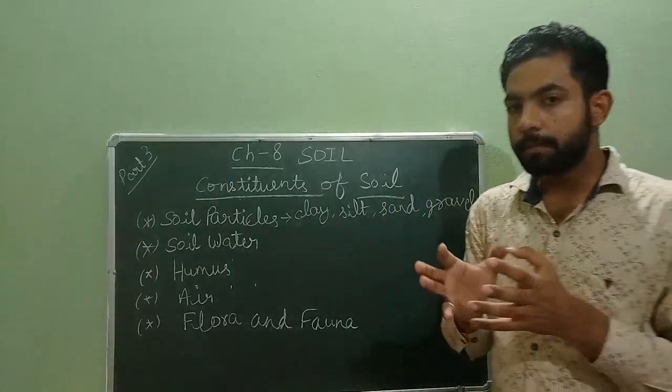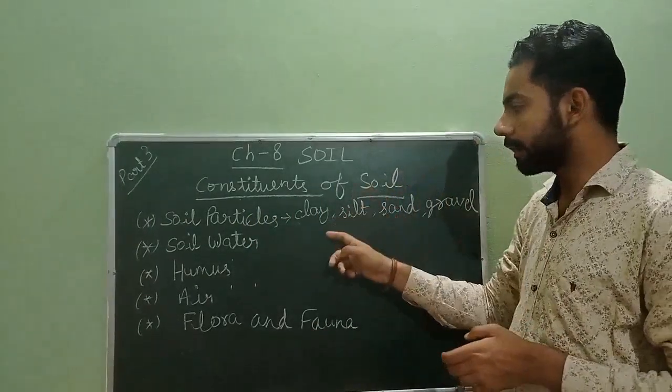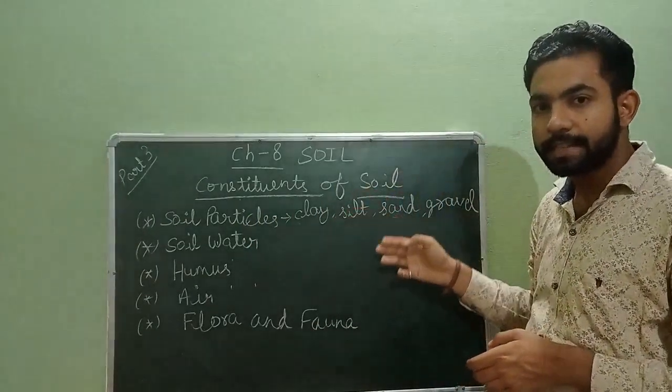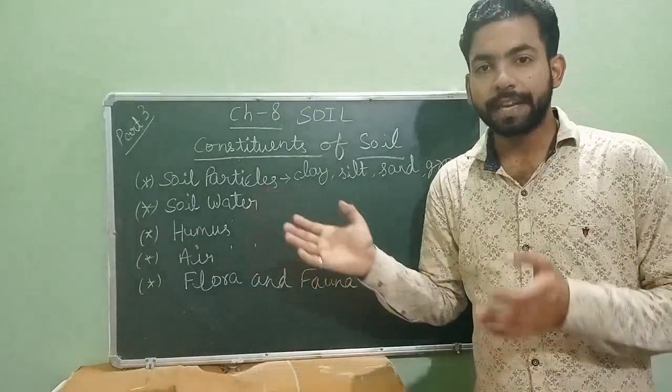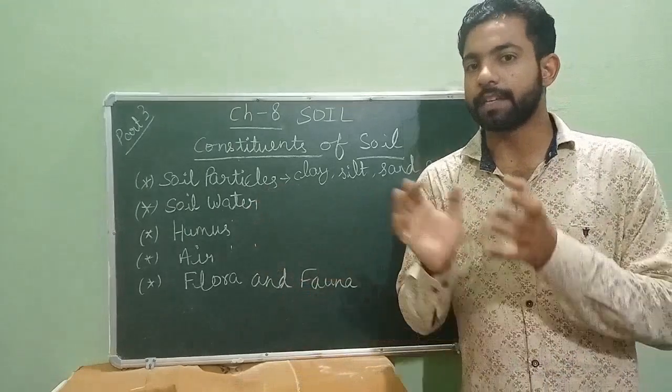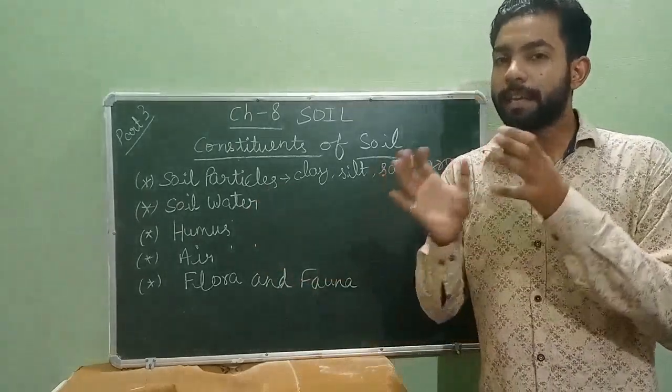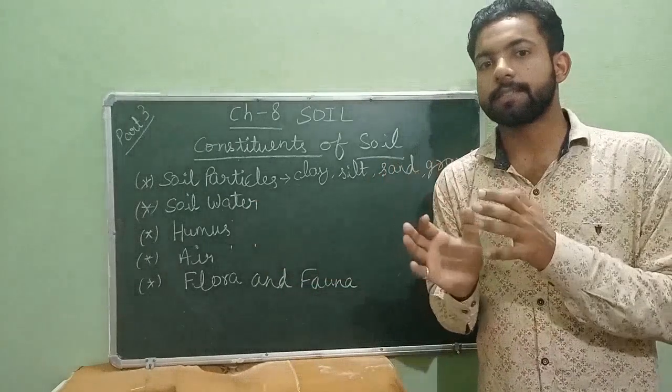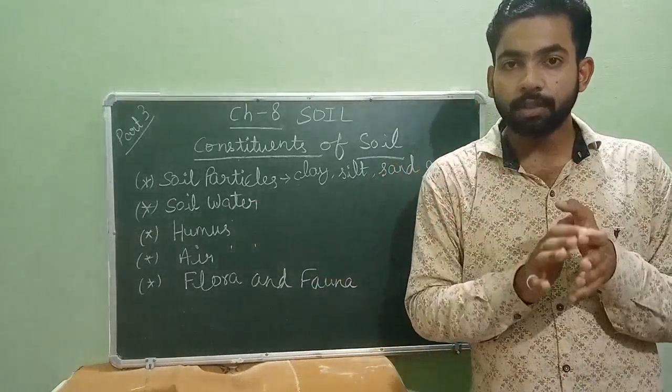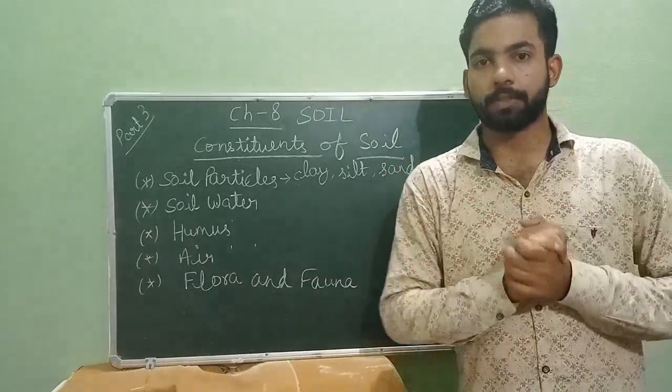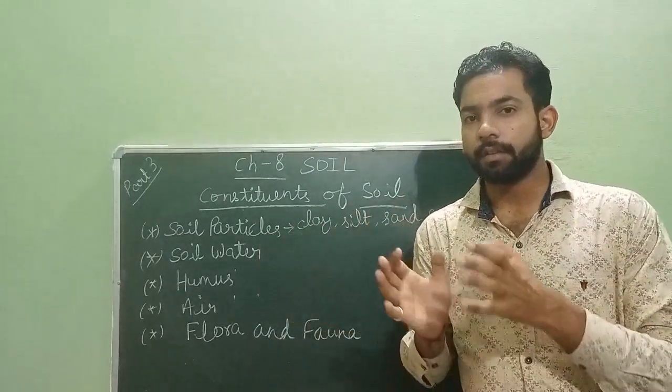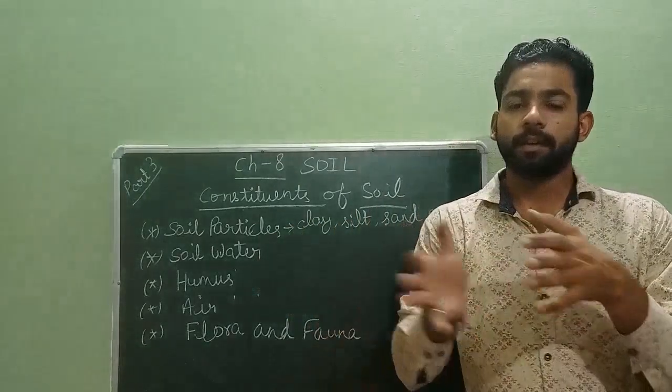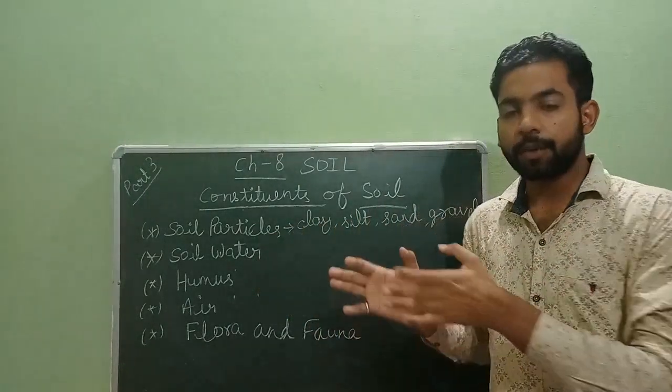Soil water: The water held by the particles of soil is known as soil water or capillary water. This is the water which is available to the roots of plants for absorption. Humus: It constitutes the remains of plants, animals, and other microorganisms. It is found in the topmost layer of the earth. Because of the humus, soil becomes fertile.